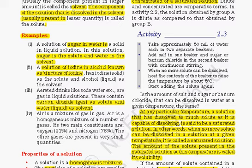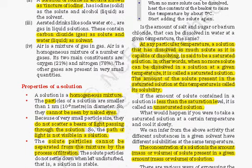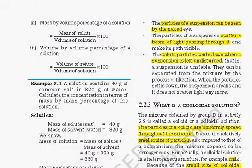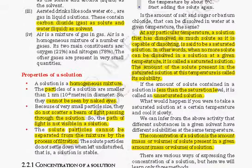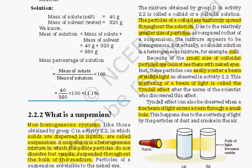The amount of solute present in a saturated solution at any temperature is called its solubility — if a substance is more soluble, more solute can be dissolved. The concentration of a solution is the amount — that is, the mass or volume — of solute present in a given amount of solution, calculated as mass of solute divided by mass of solution multiplied by 100, giving the mass percentage of solute in solution.